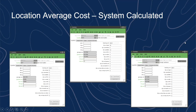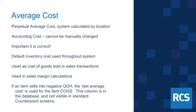Average cost is calculated by the system — it is not something you can manually change. It is always updated by the system and is one of the few fields you cannot open up and edit. It's a running perpetual average cost calculated per location. Because it is the accounting cost in the system, it cannot be manually changed, and it's very important that it remains correct.